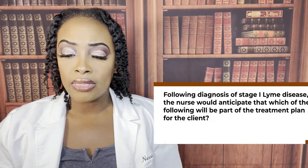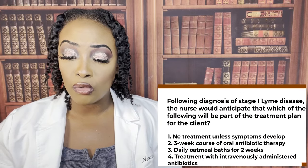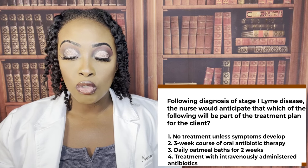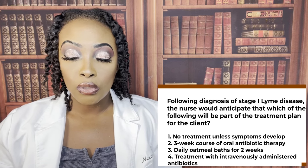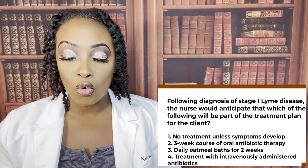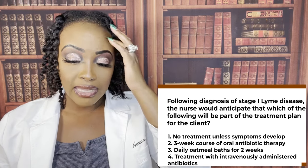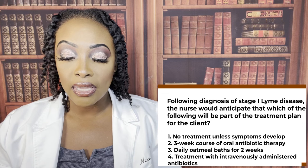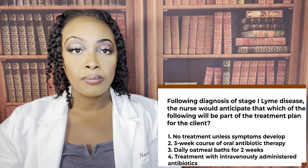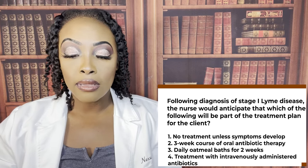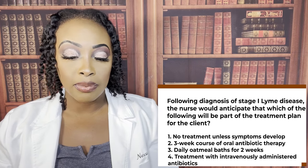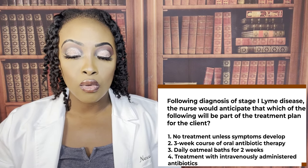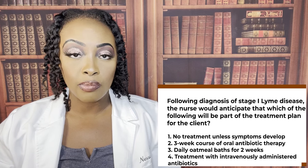Following diagnosis of stage one Lyme disease, the nurse would anticipate which of the following as part of the treatment plan? One, no treatment unless symptoms develop. Two, a three-week course of oral antibiotic therapy. Three, daily oatmeal bath for two weeks. Or four, treatment with IV-administered antibiotics. The correct answer is two — a three-week course of oral antibiotic therapy. That's typically what is prescribed.